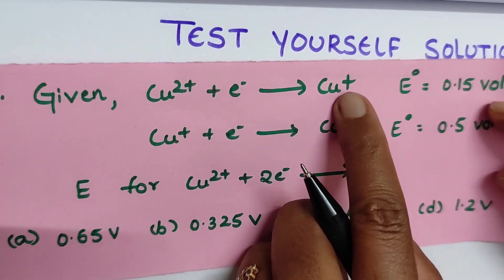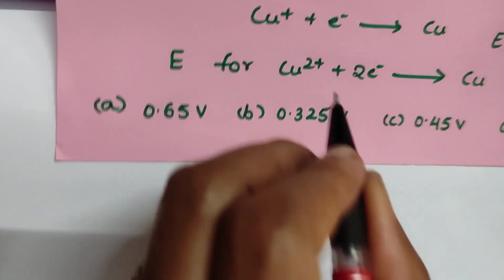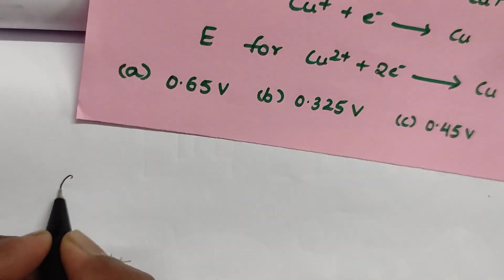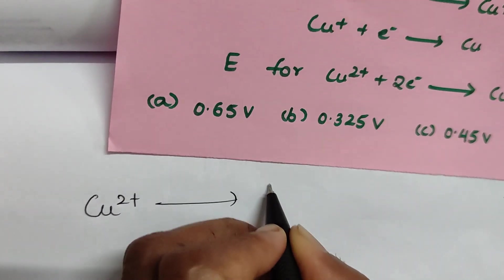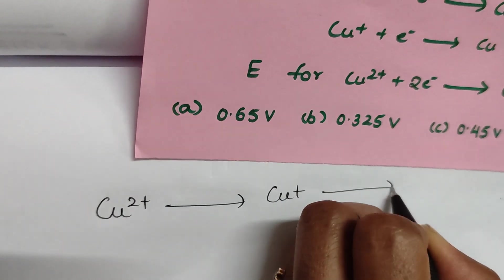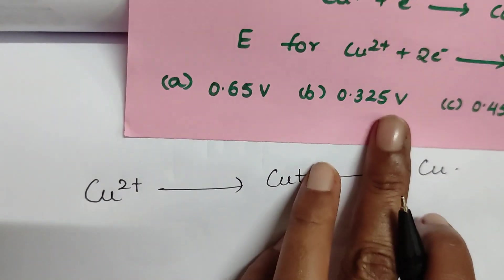Cu²⁺ plus one electron gives Cu⁺, and here for this question what I do is first write like this: Cu²⁺ converts into Cu⁺ and then converts into Cu. Always write like this.